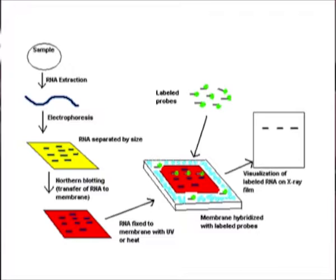The individual RNAs are then separated according to size by gel electrophoresis. After separation, these RNA molecules are transferred to a nitrocellulose filter to which the extended denatured RNAs adhere. For detection of specific RNA, the filter membrane is exposed to a labelled DNA probe where hybridization takes place, and to visualize the hybridized product, autoradiography is used.